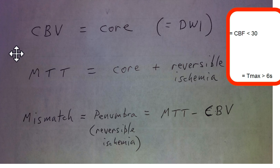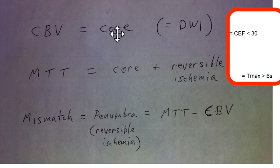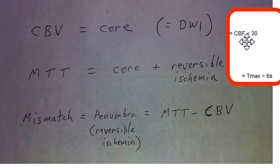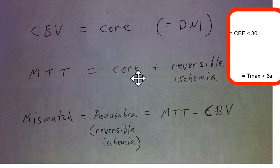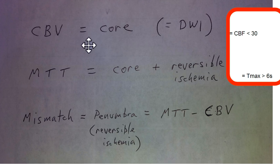As a reminder: visually, CBV equals our core infarct, but we could also use a CBF value of less than 30 as a predictor of core infarct — quantitative measurements tend to use that. For visual inspection, we use MTT as a predictor of the core infarct plus surrounding ischemia. Quantitative methods may alternatively use a Tmax of greater than 6 seconds. So visually, we use CBV and MTT as our primary parameters.